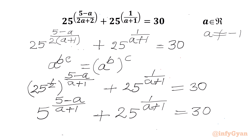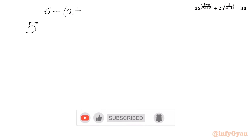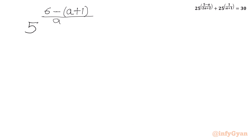Now we will target this exponent. We can write 5 minus a as 6 minus (a plus 1). So let me write 5 to the power (6 minus (a plus 1)) over (a plus 1), then we have 25 to the power 1 over (a plus 1), equal to 30.